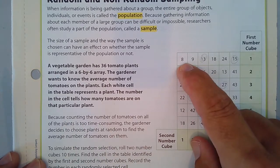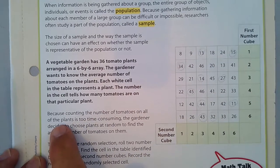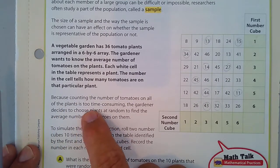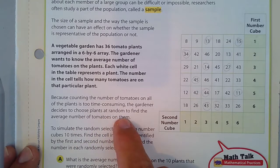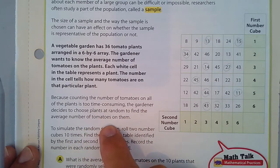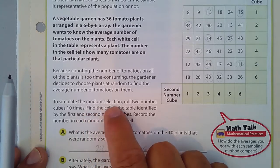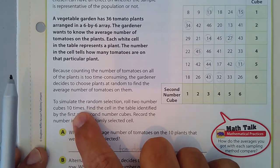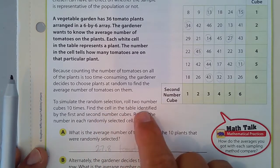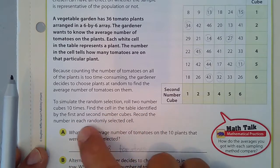So on this particular plant there are 8, and there are 13 in this one, and so on. Because counting the number of tomatoes on all the plants just takes too long, the gardener decides to choose plants at random to find the average number of tomatoes on them. To simulate the random selection, roll two number cubes ten times, find the cell in the table identified by the first and second number, and record the number.